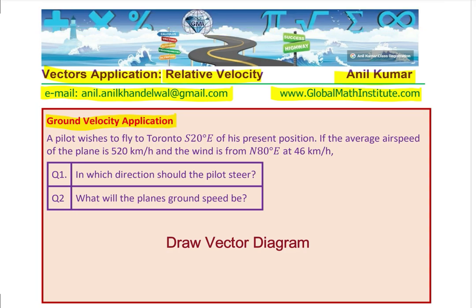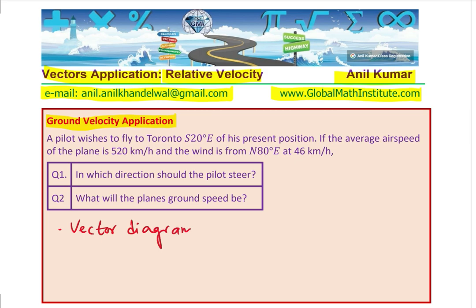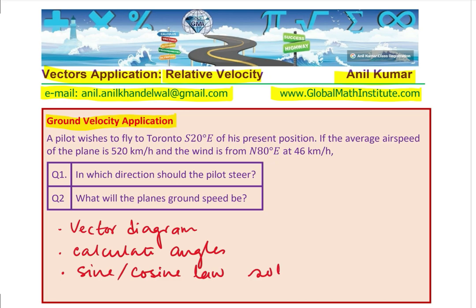We will begin with sketching a vector diagram. The first step is to sketch a vector diagram. To complete this diagram, we will calculate angles and then apply sine law and/or cosine law to solve the triangle. Once we do that, we will get the relative velocity, or ground velocity, of the plane.